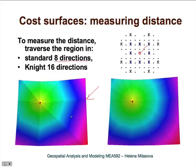We can clearly see the 8 different sections generated by using these 8 discrete directions. We can refine it and make it more accurate by using 16 directions — that means in addition to moving in 8 directions, we can also move in between. That would generate 16 directions, and then the proximity surface would look more circular.